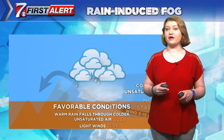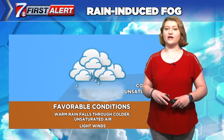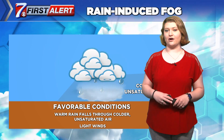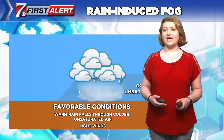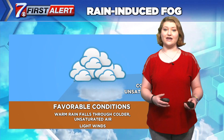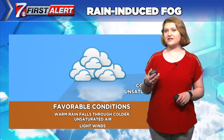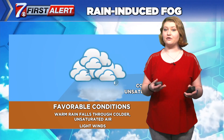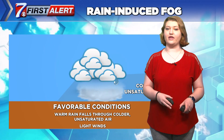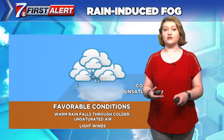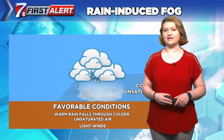Another type of fog is rain induced fog. This occurs when warm rain falls through colder unsaturated air. Water vapor content increases due to evaporation of raindrops, and air is then cooled to saturation by the latent heat of evaporation. This process can produce either low clouds or fog. Fog occurs when winds are 15 knots or less, while low clouds are produced when wind speeds are greater than 15 knots due to turbulent mixing.